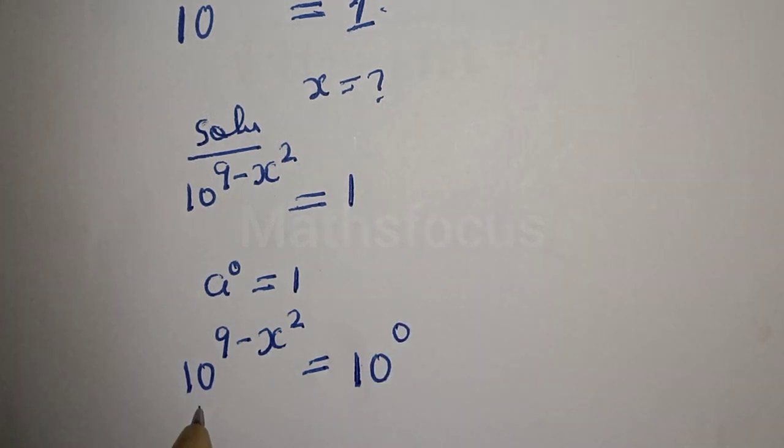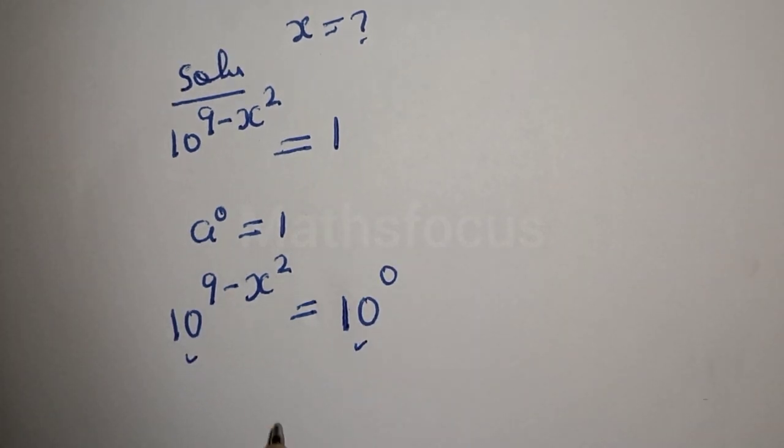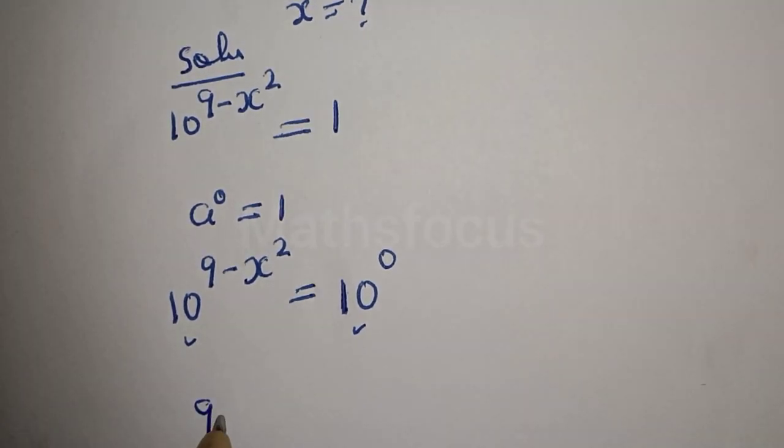But they have the same base 10, then we consider the exponent: 9 minus x squared is equal to 0.